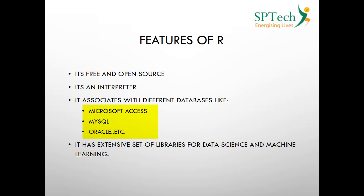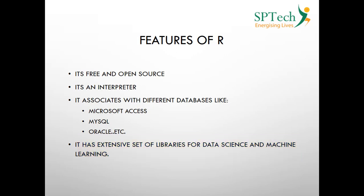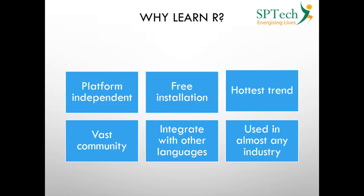R's support for various database management systems is one of its main features. More importantly, R has an extensive set of libraries — today it has more than 10,000 libraries exclusively used for data science and machine learning. These are some of the main features of R.